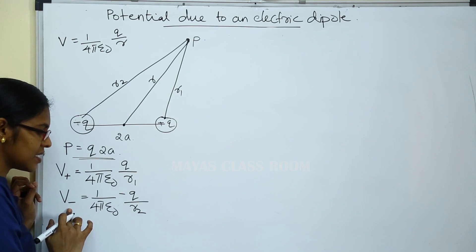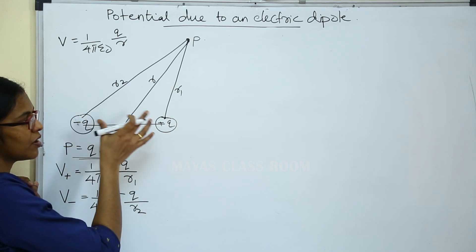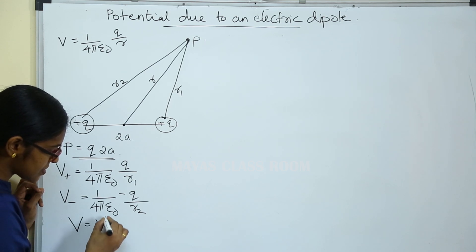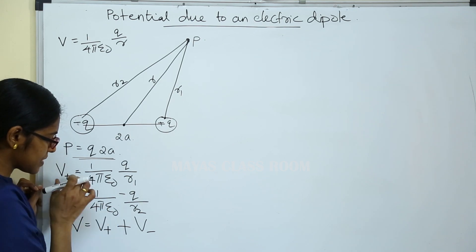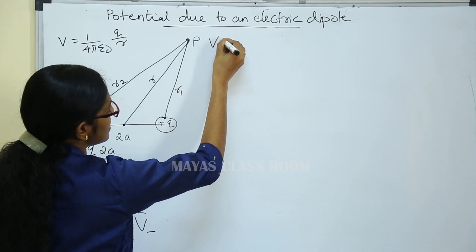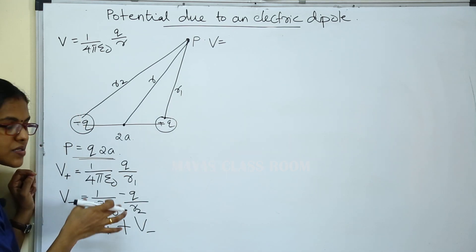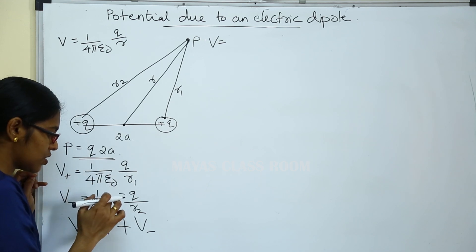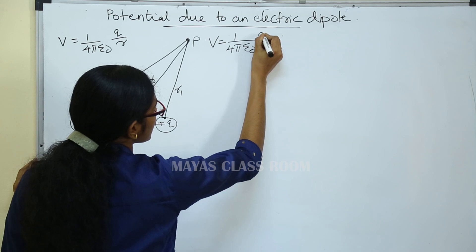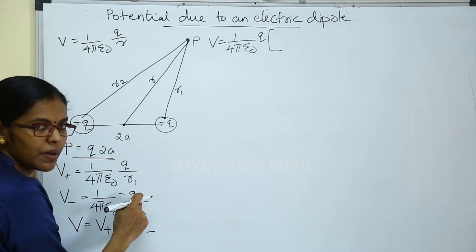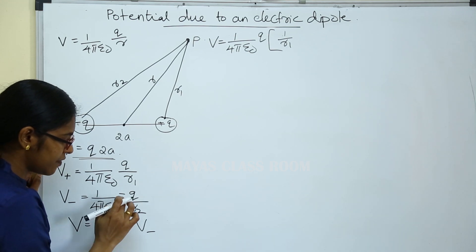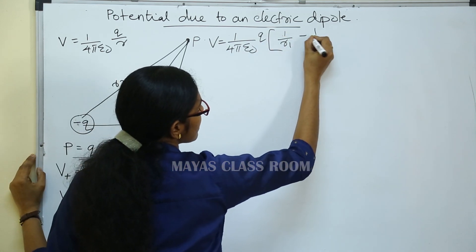We consider the total potential at P due to the electric dipole. The total potential V is equal to V plus plus V minus, which gives us 1 by 4 pi epsilon 0 multiplied by Q times the quantity 1 by R1 minus 1 by R2.